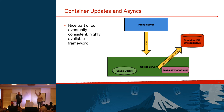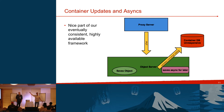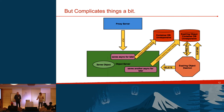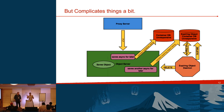With a normal object put, the proxy sends it to the object server, which saves the object and sends a request to the container database. If the container is unresponsive, it saves an async for later, and a background daemon sends those up later — part of our eventually consistent framework. But with expiring objects, there's a whole second async for the expiring objects marker, plus a daemon constantly hammering the expiring objects container to find objects to delete — tripling or quadrupling the load on the container layer.